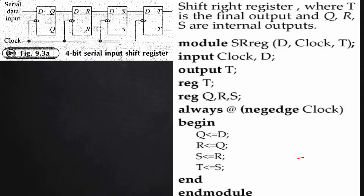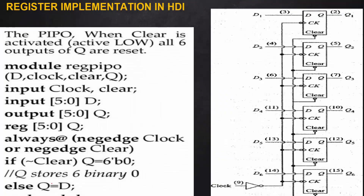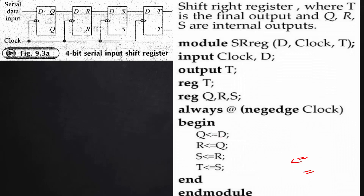The non-blocking assignment operator (<=) is used here instead of the blocking assignment (=). Suppose we used blocking assignment: q = d, r = q, s = r, t = s. In that case, the new value of d would propagate through all stages — the same d value would appear at q, r, s, and t simultaneously.